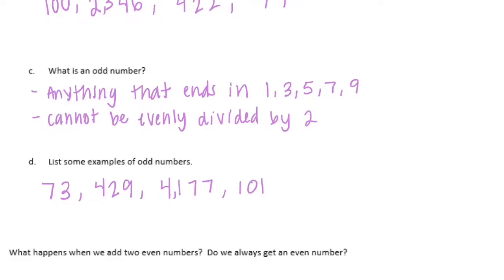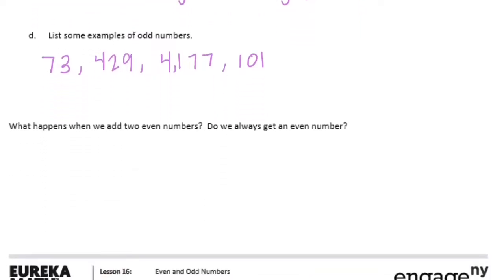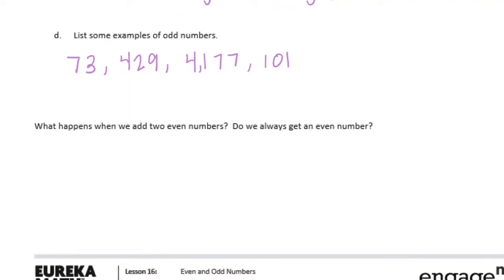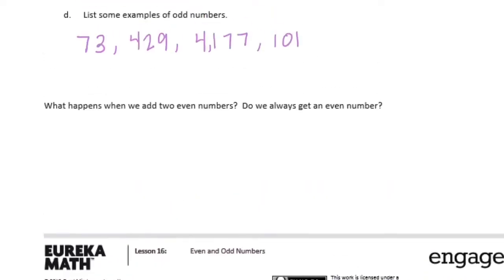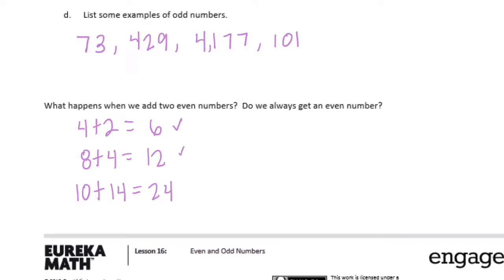What happens when we add two even numbers? Do we always get an even number? Let's think of two even numbers and show whether or not we would get an even number. Let's try 4 plus 2 — we get 6. Let's try 8 plus 4 — that's 12, an even number. 10 plus 14 is 24, also an even number. So yes, I think we do always get an even number.